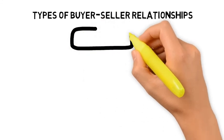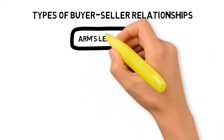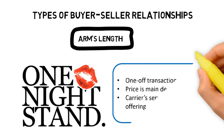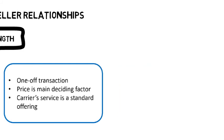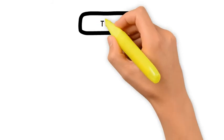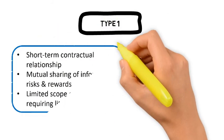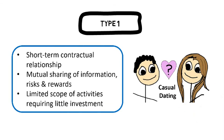There are many types of buyer-seller relationships which a shipper can seek to establish with their carriers. For what is known as the arms-length relationship, it is often based on a one-off transaction where price is the main deciding factor and the carrier service is usually a standard offering — for example, a one-time bus transport for a family day event that happens only once every five years. In a Type 1 relationship, there is only a short-term contractual relationship with some mutual sharing of information, risks and rewards, but usually a limited scope of activities requiring very little investment — for example, a one-year truckload service with a fixed schedule, standard volume and rates.